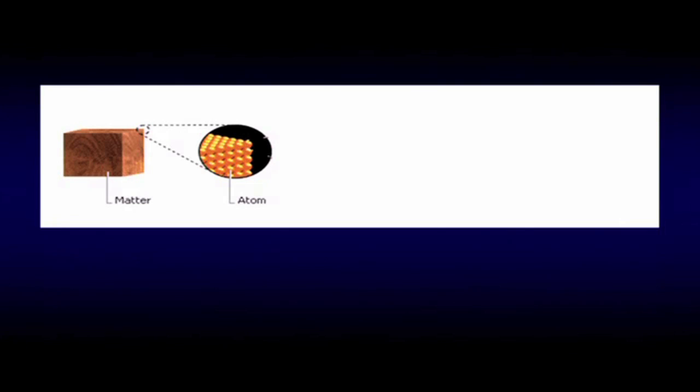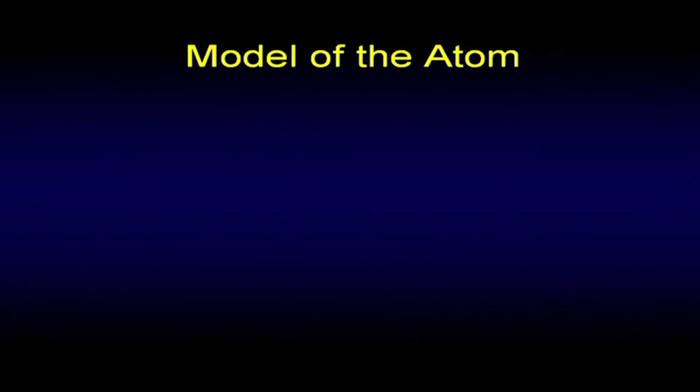So matter, we've talked about, we've got atoms here. Let's talk a little bit about the atom. Some of this is review for you. Let's take the simplest atom. We have a hydrogen atom here. It has a nucleus and an electron running about it. Now, this is not to scale.